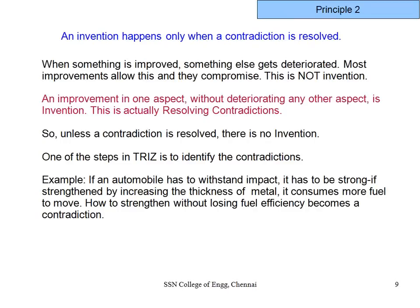Principle 2 states: an invention happens only when a contradiction is resolved. When something is improved, something else deteriorates. Most of us find a compromise, but that is not an invention. An improvement in one aspect without deteriorating any other aspect is what the inventor calls resolving contradictions. He will not accept a problem unless he sees a contradiction. If there is a contradiction, there is a chance for invention; if not, it's only an ordinary problem.